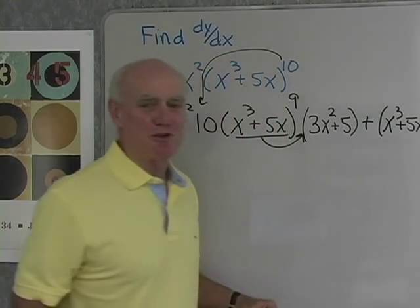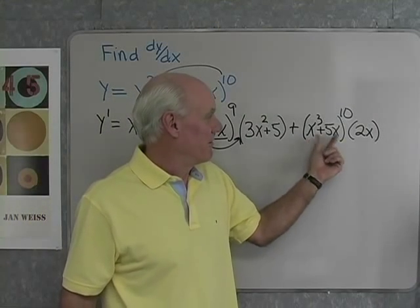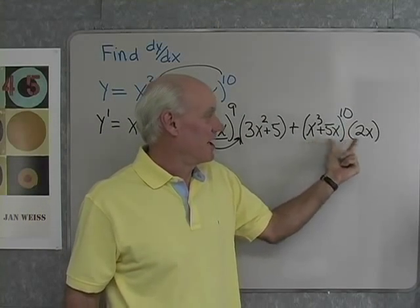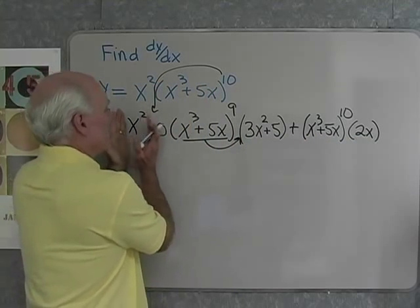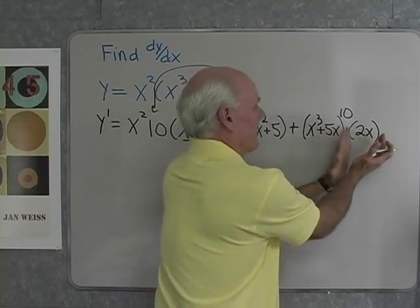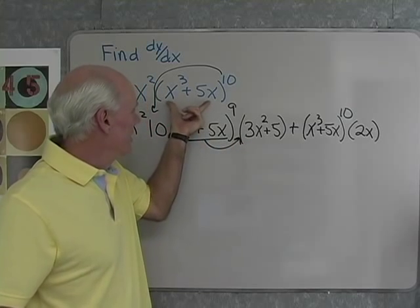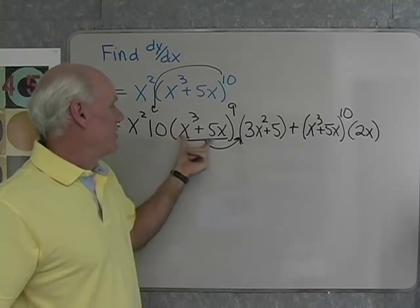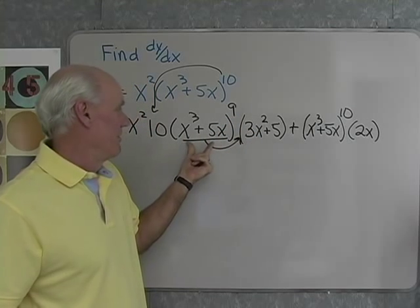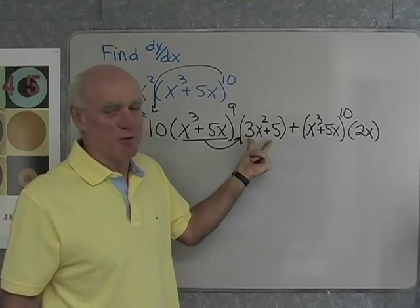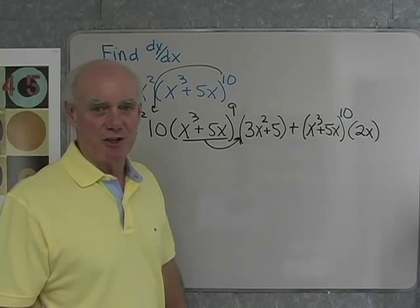The camera moved slightly, but you can see x cubed plus 5x to the tenth — that's the second times the derivative of the first, which is 2x. So: first times the derivative of the second, plus the second times the derivative of the first. When I differentiated the second, I used the chain rule: 10, don't change the base, power 1 less, then differentiate the base. The derivative of x cubed plus 5x is 3x squared plus 5.